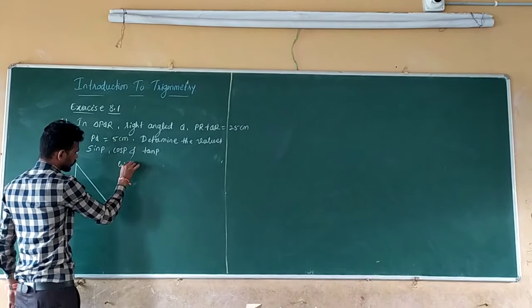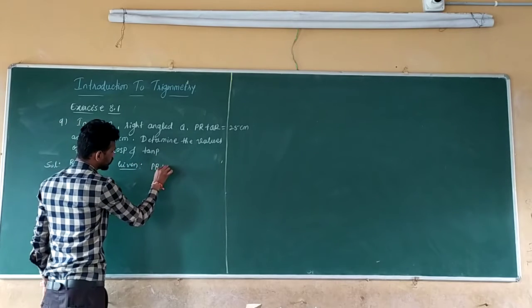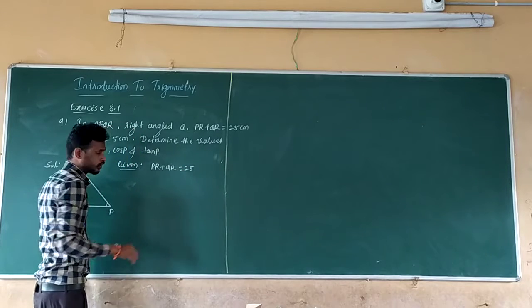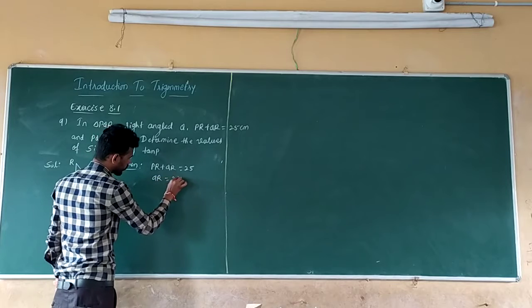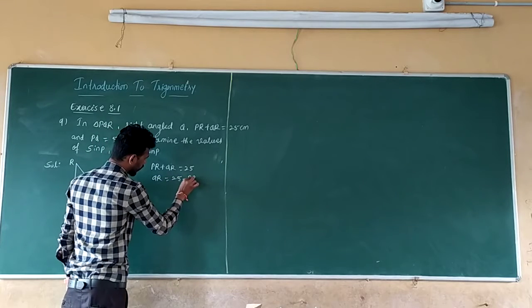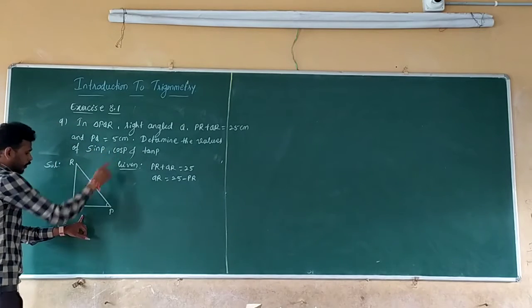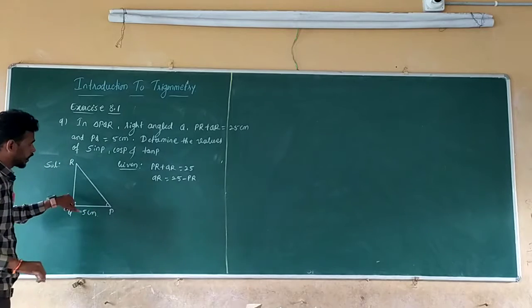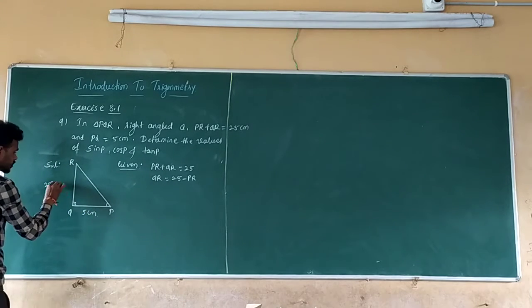So now, equation one: PR plus QR which is equal to 25. Then QR equals to what you can write? 25 minus PR, you can write. So now, PQ is how much? 5 cm. Now you know that QR is 25 minus PR.